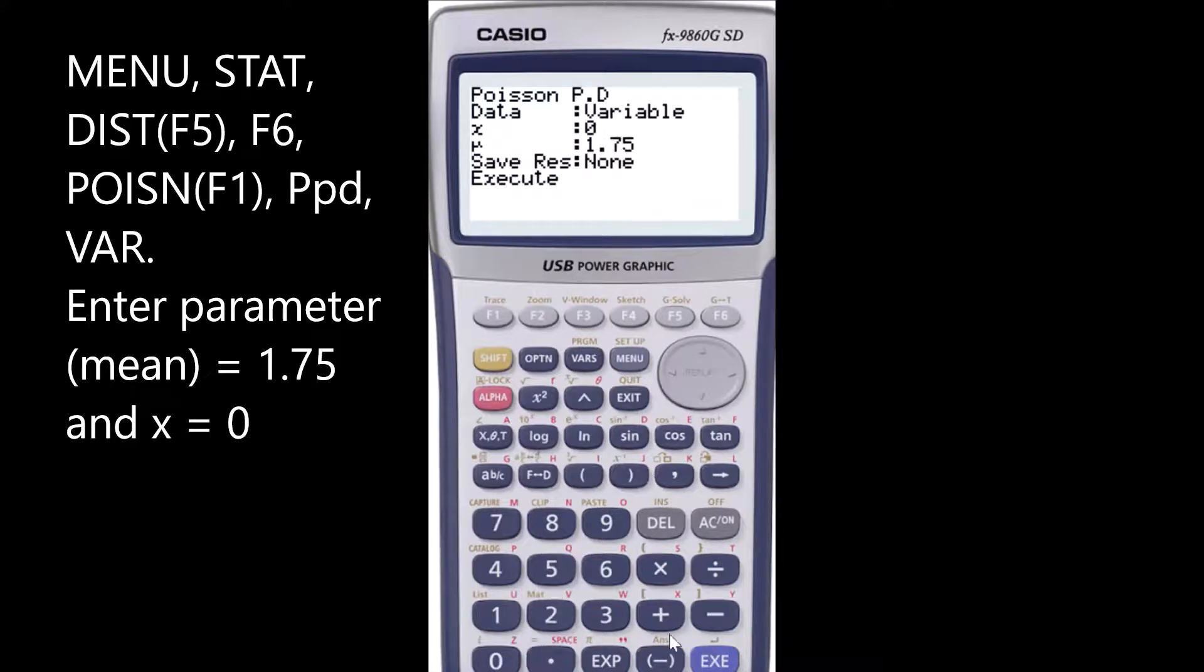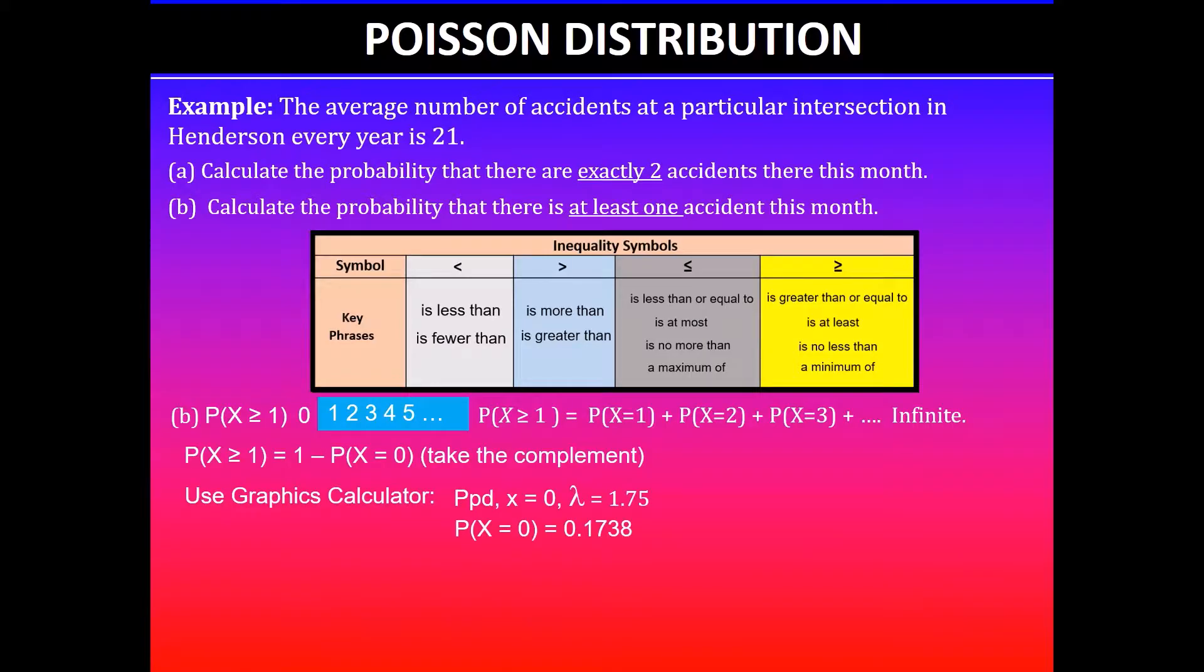If I enter that, that will give me the probability when it's exactly zero, which means no accidents this month. So 0.1738 rounded up, the probability when X is equal to zero is 0.1738, but the question said find the probability that there is at least one accident this month.